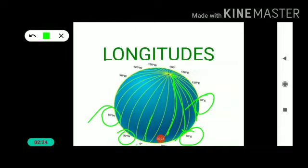You can see here two poles and the longitudinal lines touch them. This is the north pole and here is the south pole. These lines are touched at these two poles, where all the meridians meet at the poles. The distance between two longitudes at the poles is zero degrees.